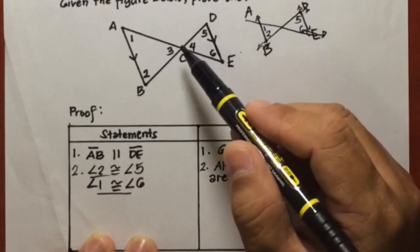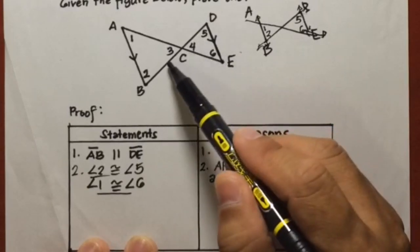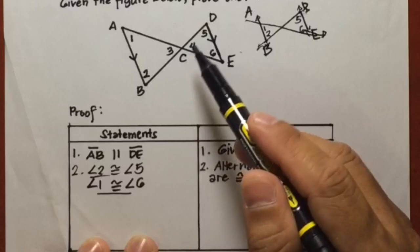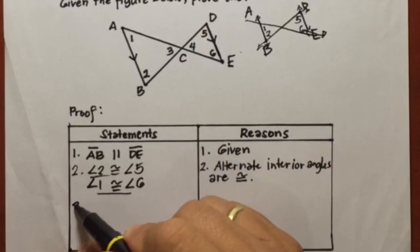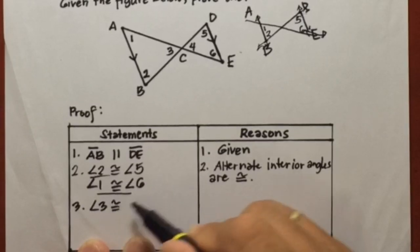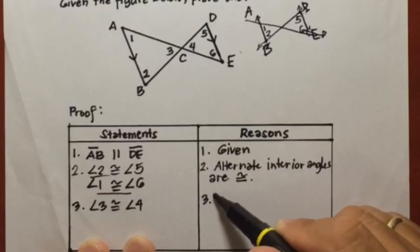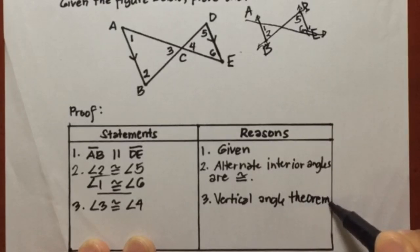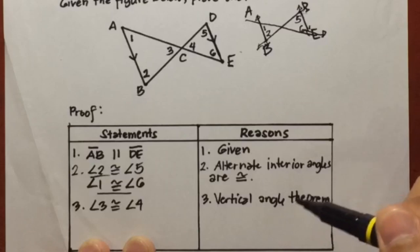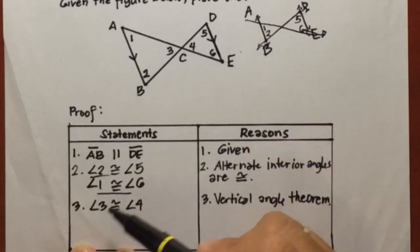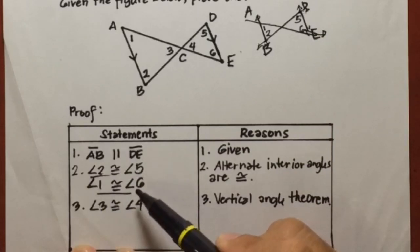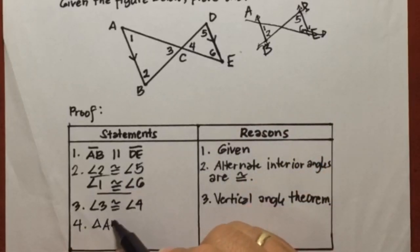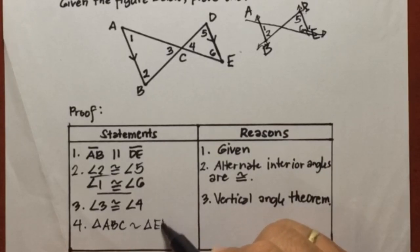There is one pair left — we need to prove that angle 3 and angle 4 are congruent. Looking at the figure, these two angles are congruent by the vertical angle theorem, which states that vertical angles are always congruent. Since we have proven that all three pairs of angles of the two triangles are congruent, we can now say that triangle ABC is similar to triangle EDC.